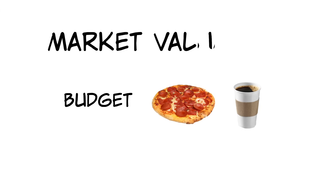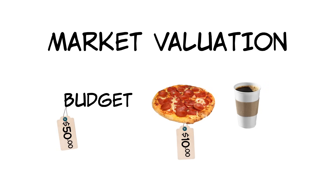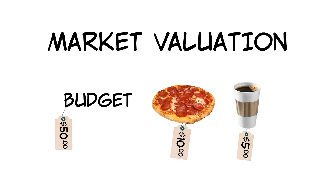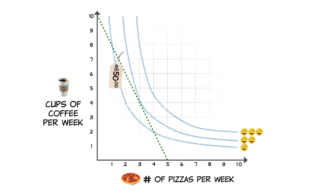Let's go back to our pizza and coffee example. You have a budget of $50, pizza costs $10, and each cup of coffee costs $5. Now, let's assume your indifference map looks like this. Making the best choice you can afford means you will spend your entire budget on the combination of pizzas and cups of coffee that make you the happiest.